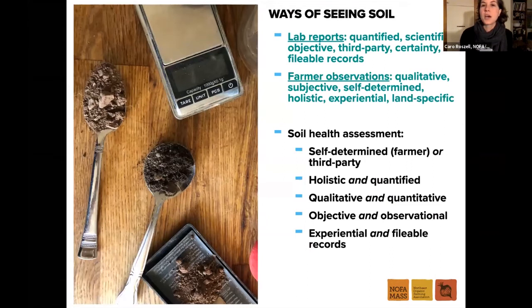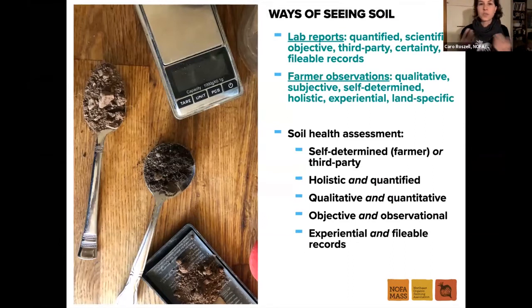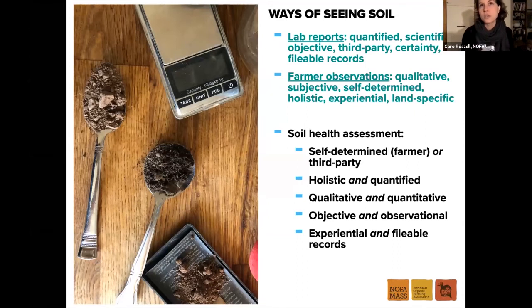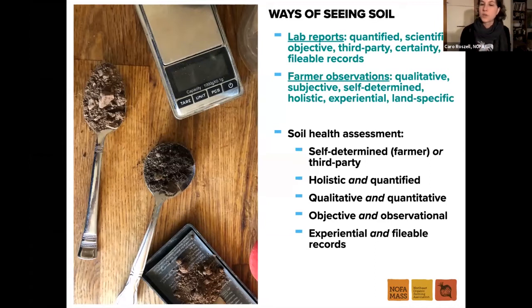The goal is to collapse what are sometimes seen as binary approaches — where lab-based soil analysis is seen as more scientific and objective, while farmer observations are viewed as qualitative and experiential. The carbon proxy tests bridge that distinction by providing quantification around observations farmers are already making. It's both experiential and recordable, self-determined in that farmers can do many tests themselves, and holistic while still being quantifiable.